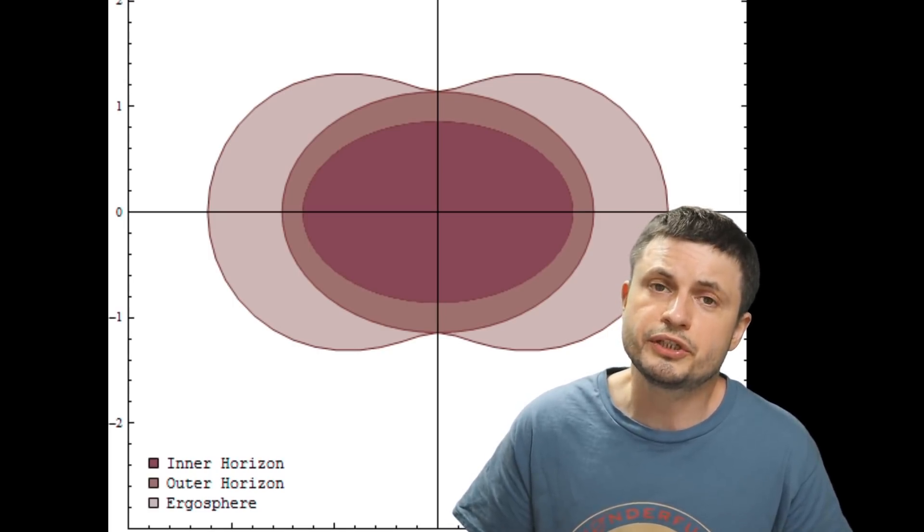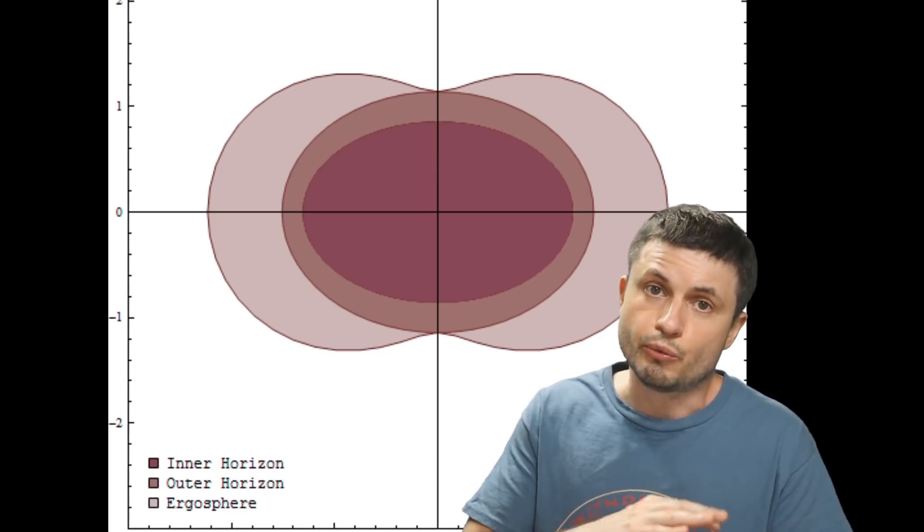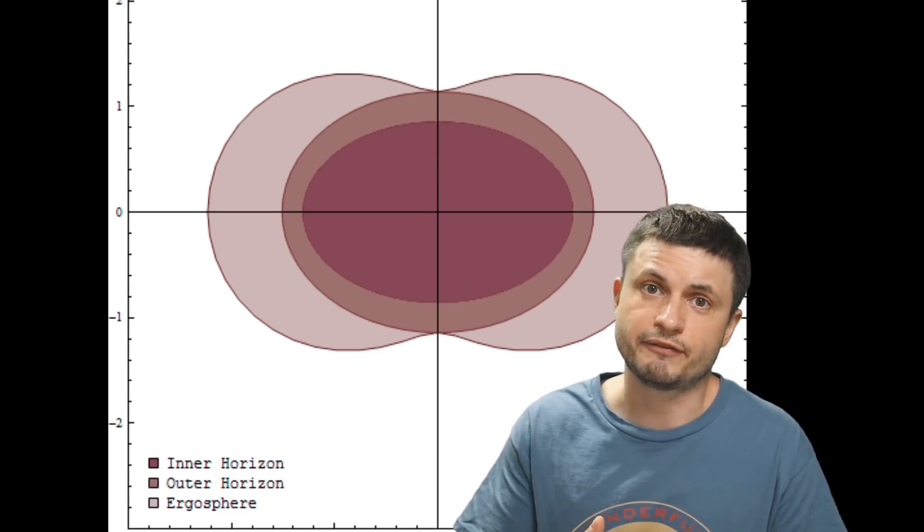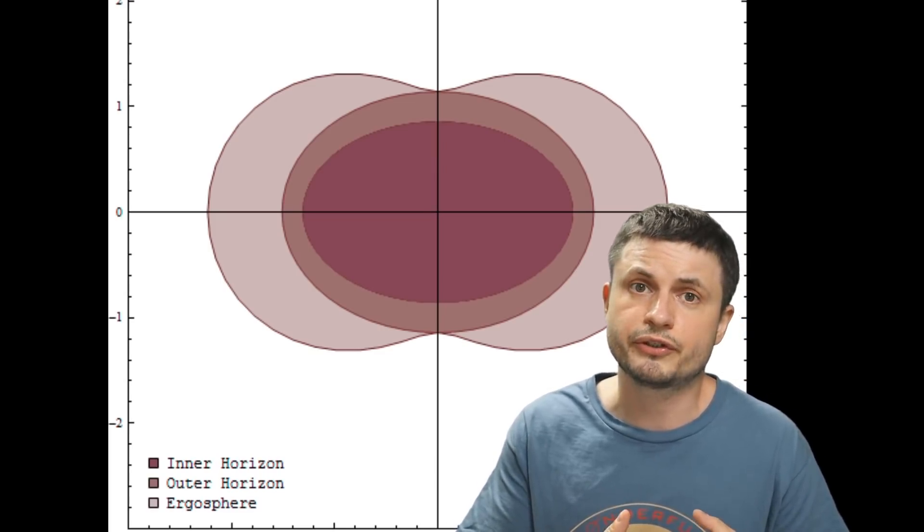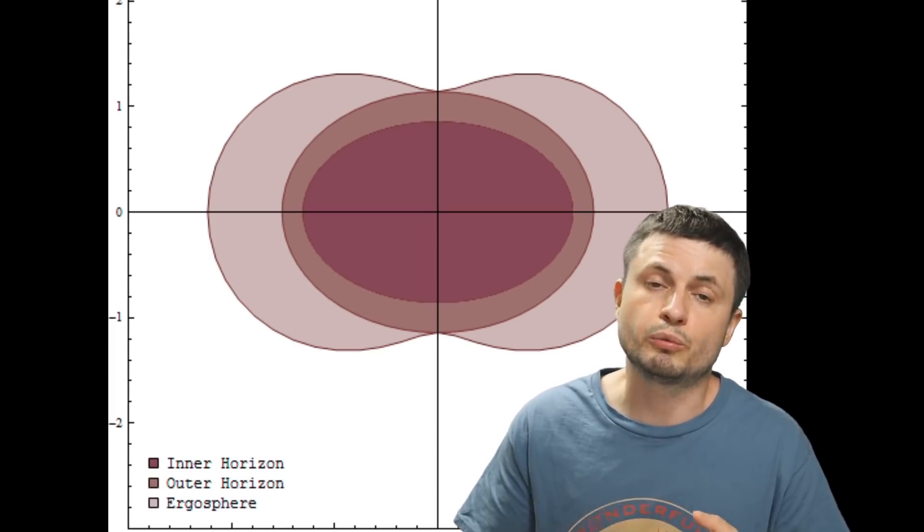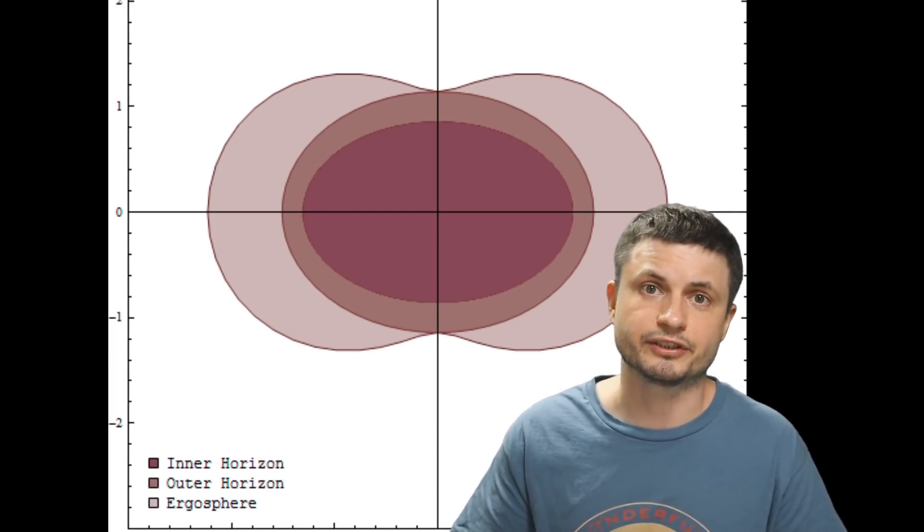It essentially is the region where the space-time itself is dragged around the black hole to the point where if you were to sort of be inside the ergosphere, you would be forced to spin with the black hole. There's absolutely no way for you to spin against the flow.